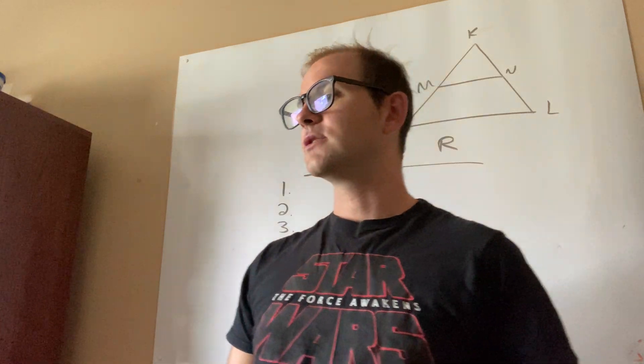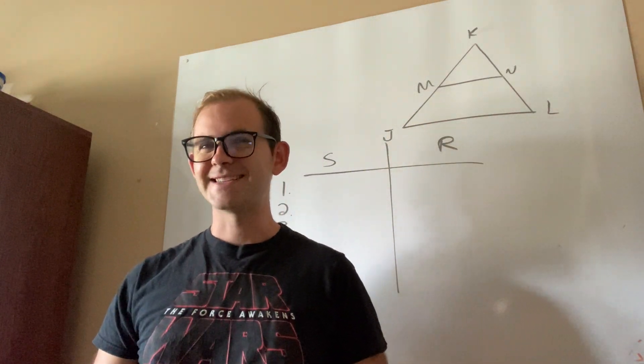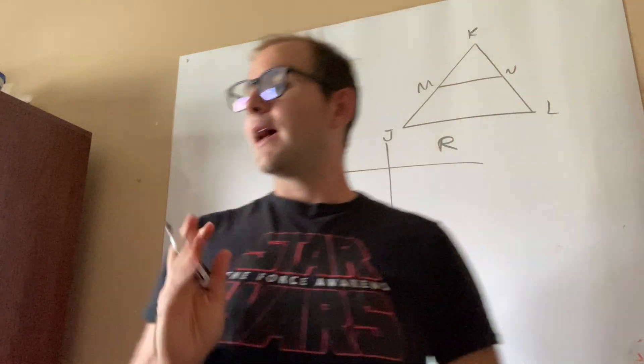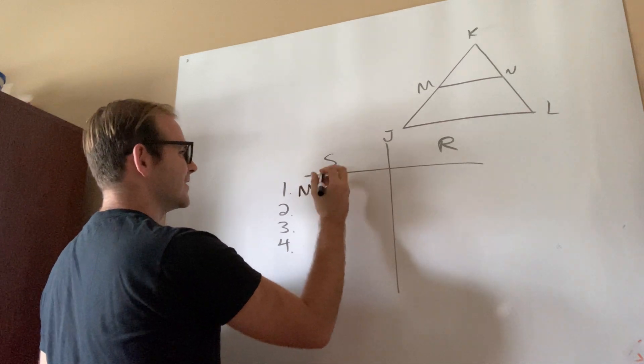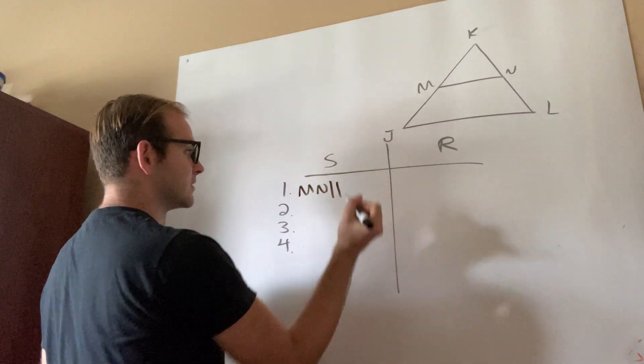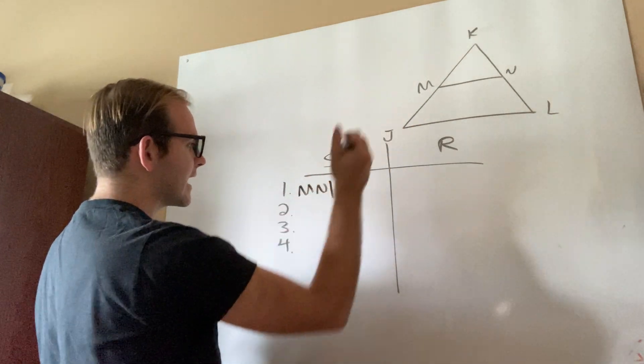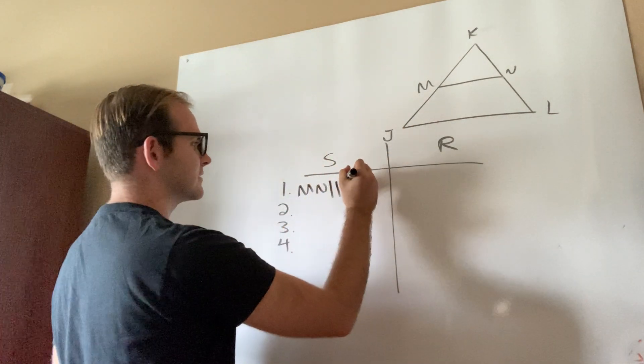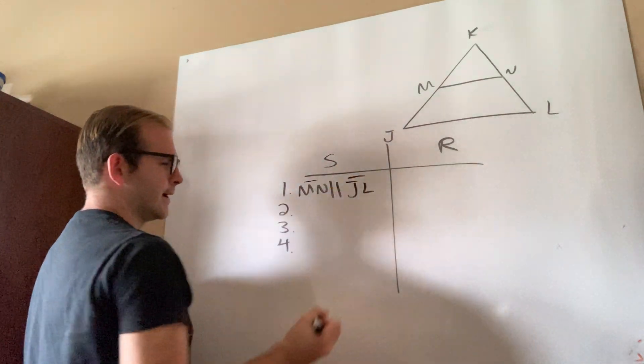Now, we're going to start off by taking a look at example number one. Once again, example number one. Now, as always with proofs like these, it's very helpful to know what I'm given. So in this case, they tell me that segment MN is parallel to segment JL. So let me actually write that in.